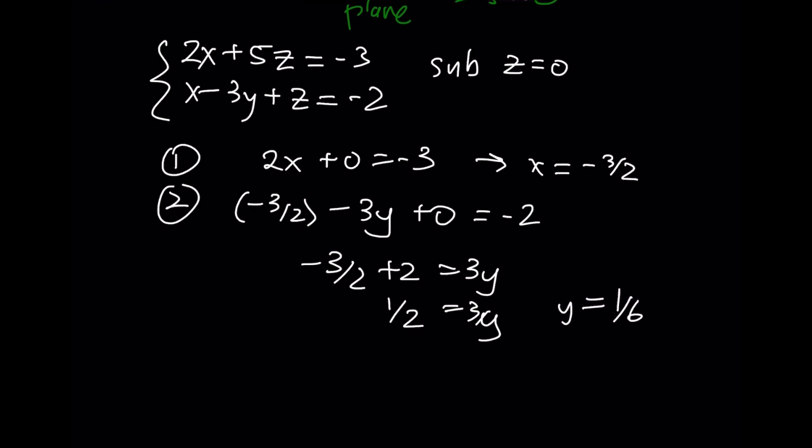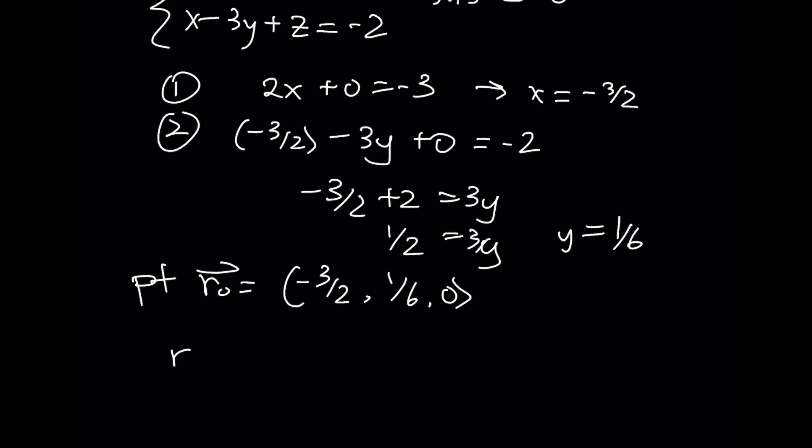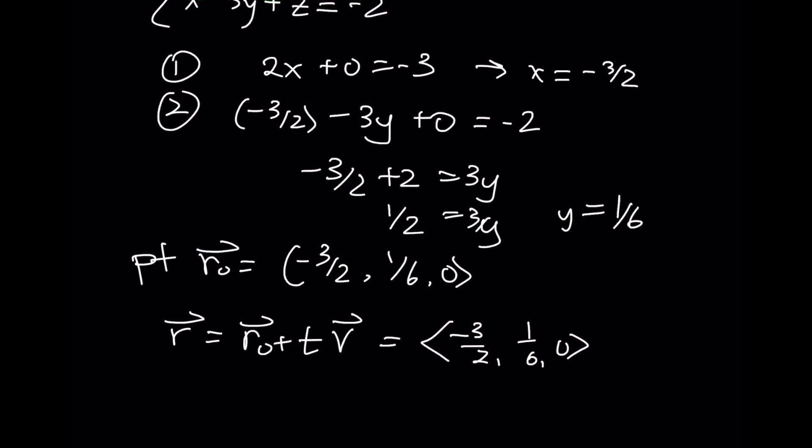The point R₀ is <-3/2, 1/6, 0>. And the equation of the line that represents the intersection of those two planes is <-3/2, 1/6, 0> plus t into that vector that I found earlier, <5, 1, -2>.